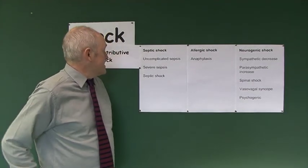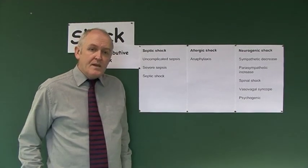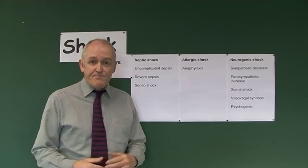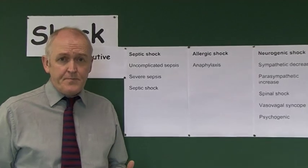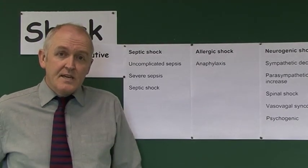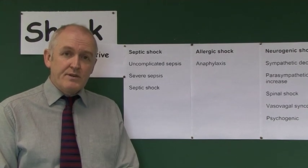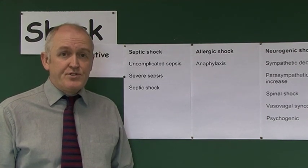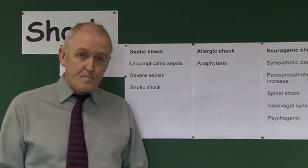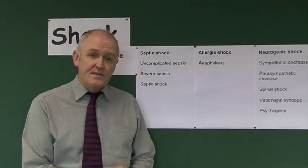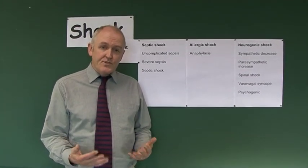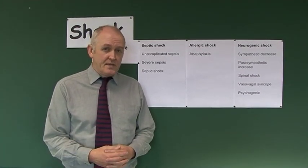The first one to look at is septic shock. Sepsis is quite common — we get it all the time. It's basically whenever you've got an infection. The surviving sepsis campaign guidelines tell us that someone becomes septic if their temperature reaches 38.3 degrees centigrade, so there's an increase in body temperature, and typically the heart rate will increase to over 90 beats per minute.